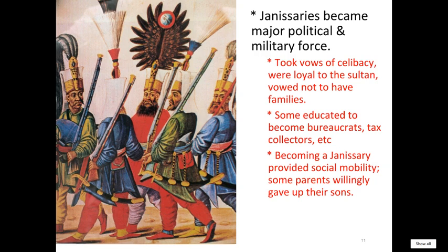However, the Janissary Corps was so successful that these soldiers and administrators became the upper class in the Ottoman Empire. Eventually, families were actually willing — hoping and praying — that the government would come and take their kids, because it was a route for social mobility. Christians living in the Ottoman Empire, even though they had religious freedom and tolerance, had very restricted opportunities to move up in society. But the Janissaries was an option, so families voluntarily gave up their kids because they knew it was a chance for social mobility.